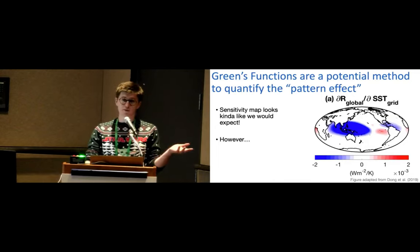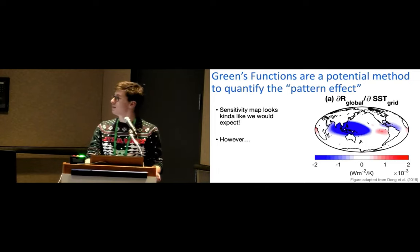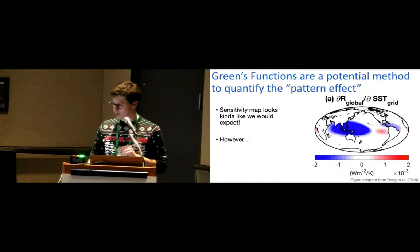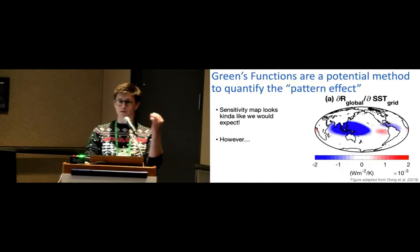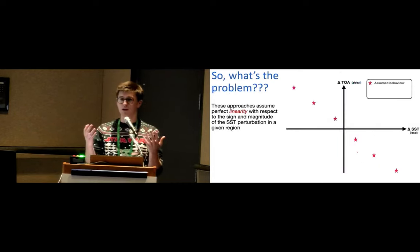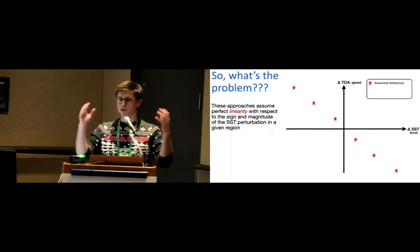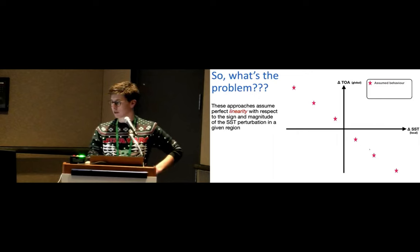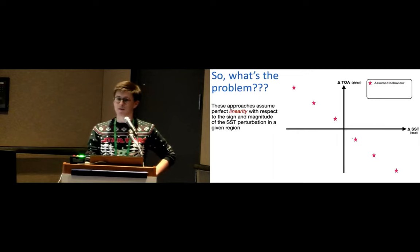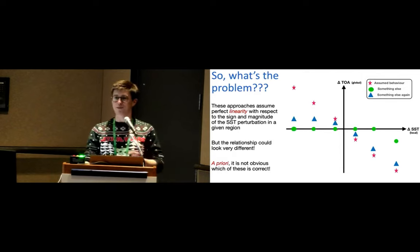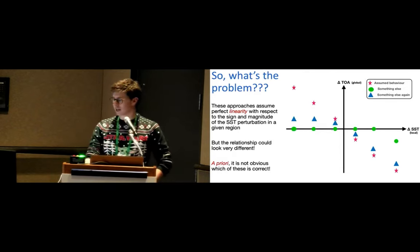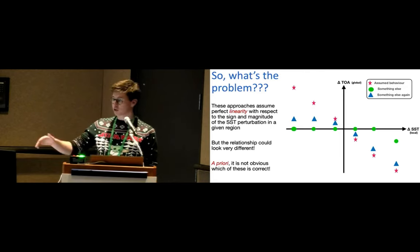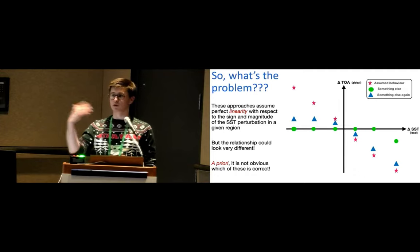So this is great. It works. You never have to run atmosphere-only models ever again. You know, we can just trust this. However, there's a problem here. The issue is that this kind of watts per meter squared per Kelvin is kind of coming from a linear regression. So when you do this type of work, you're assuming that your relationship between global mean TOA flux and local SST for a given region maybe looks something like this. So you get the origin for free, you run one experiment, you assume it looks something like that, but it could look different, right? It could look very, very different, and a priori it's not clear which one of these are true, and obviously if you try drawing a line through the origin to match these points, you could be very biased.